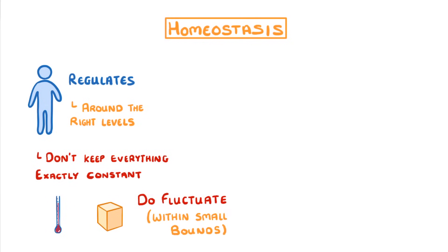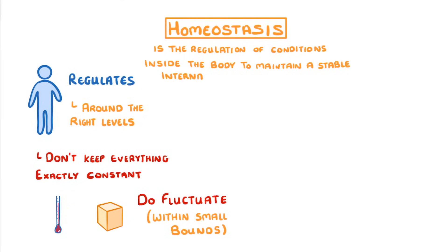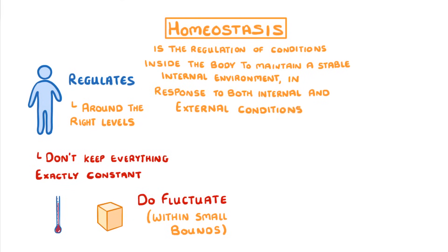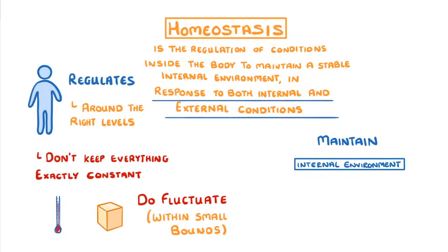As for a definition, we can say that homeostasis is the regulation of conditions inside the body to maintain a stable internal environment, in response to changes in both internal and external conditions. This last bit just means that we can maintain our internal environment even if changes are taking place outside of our cells.